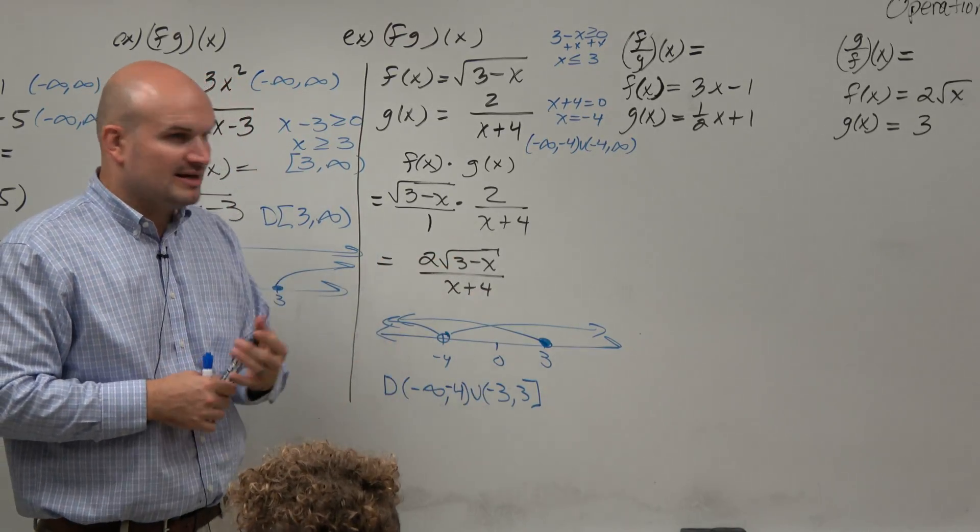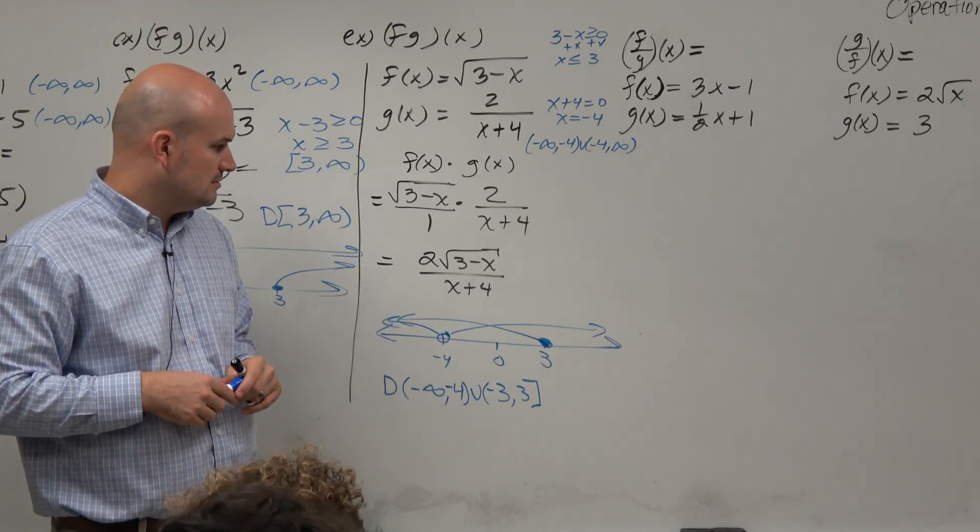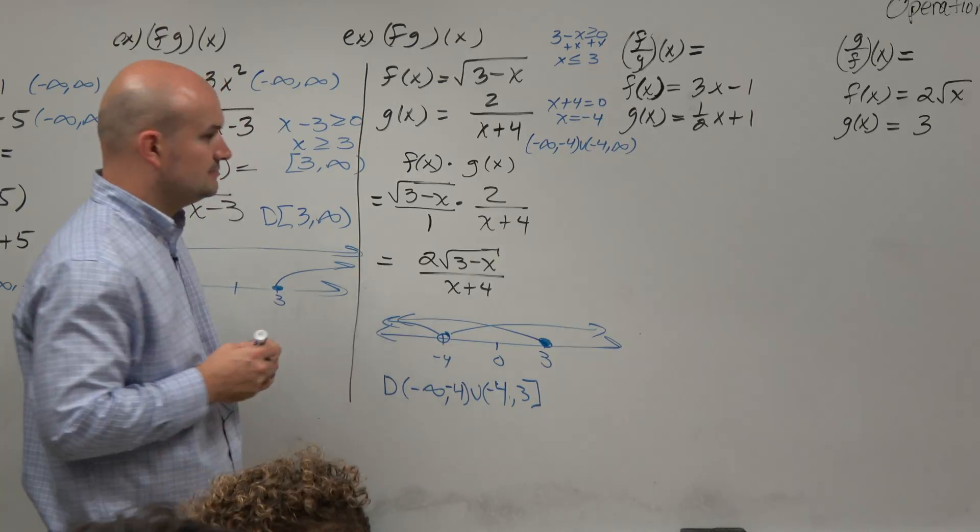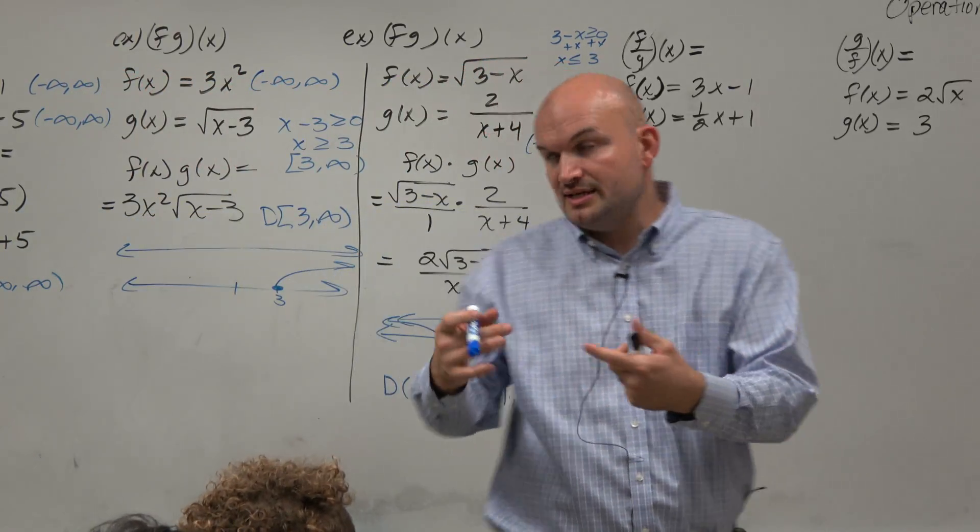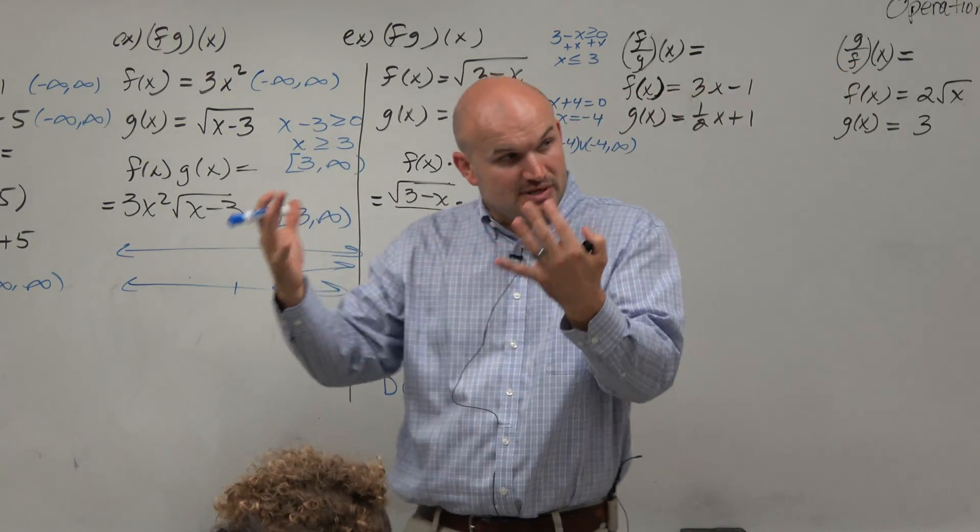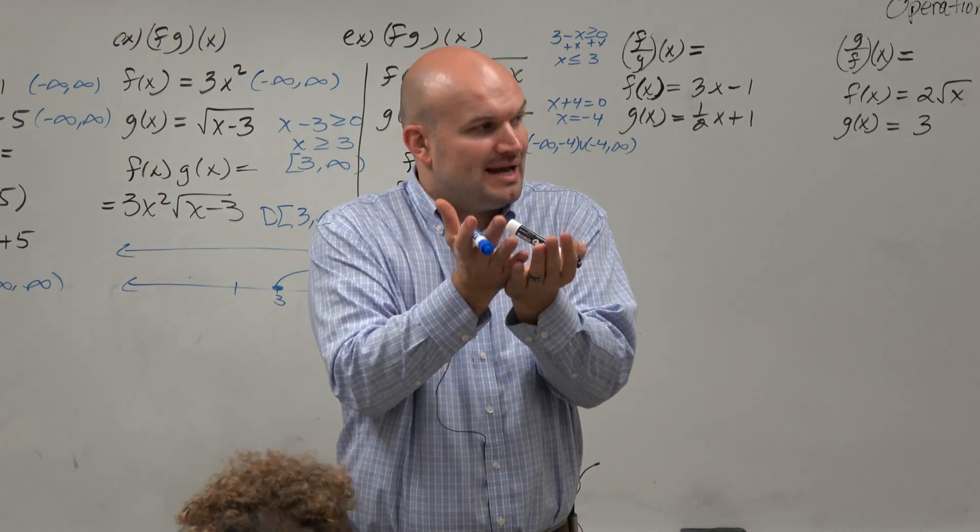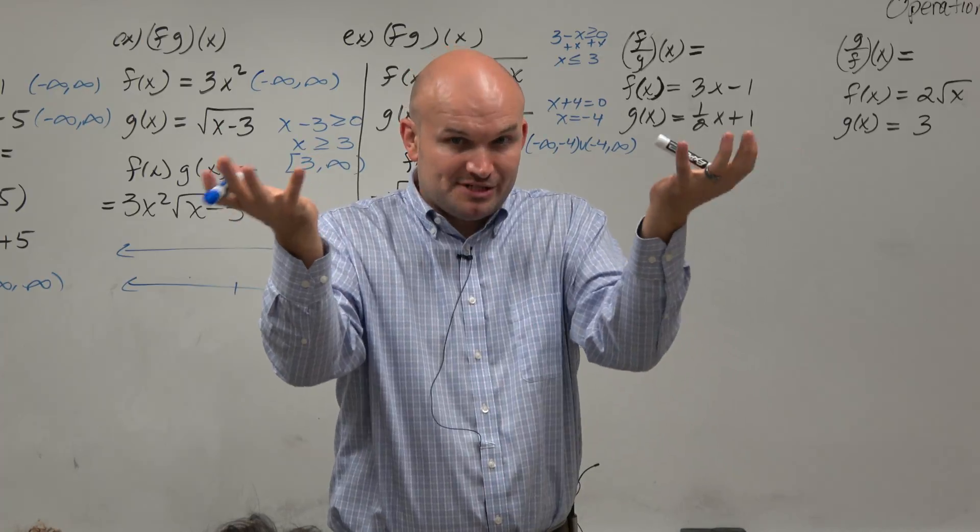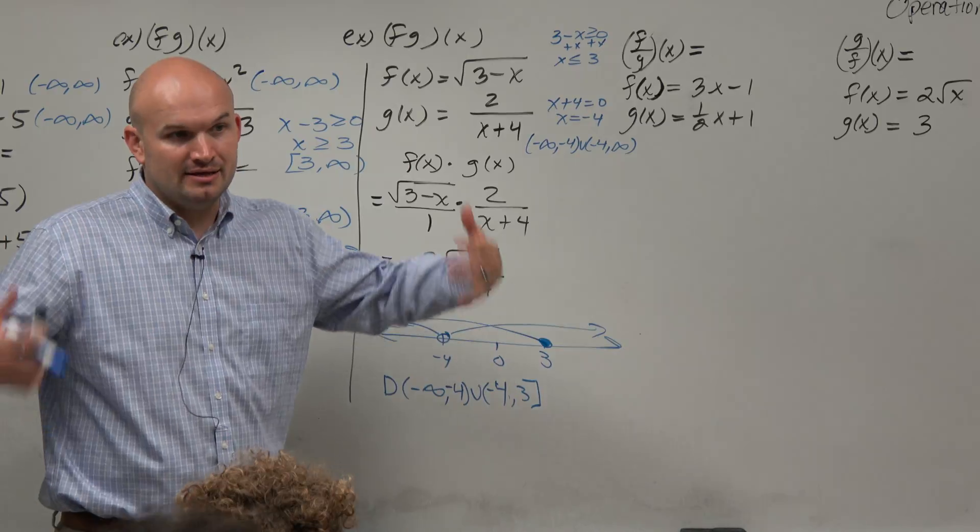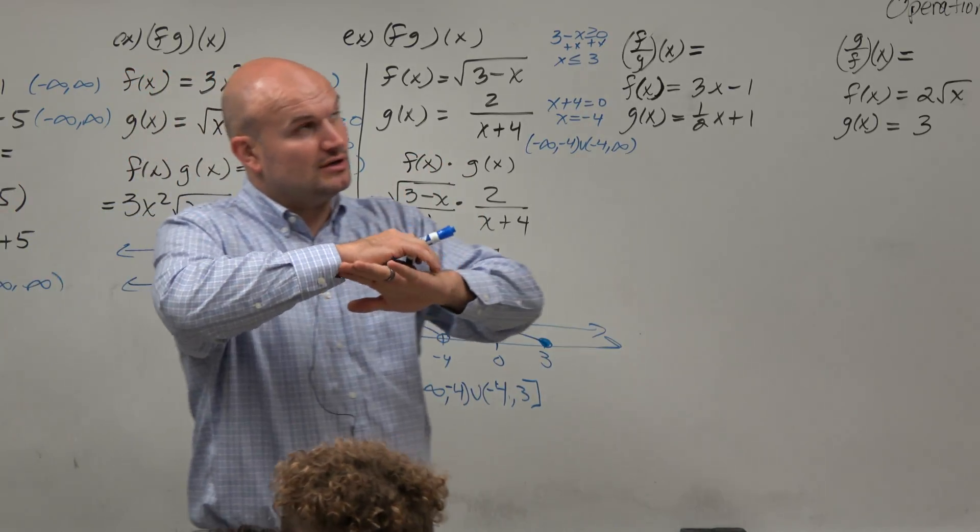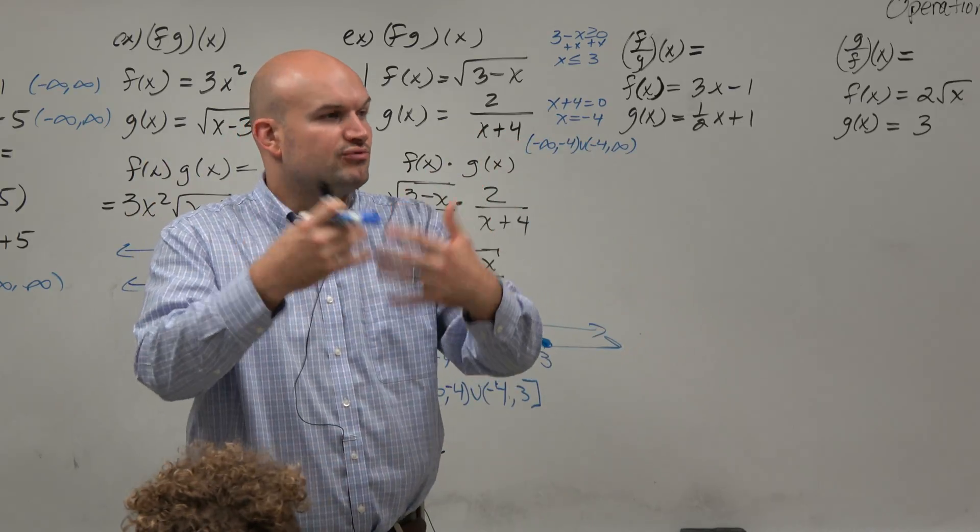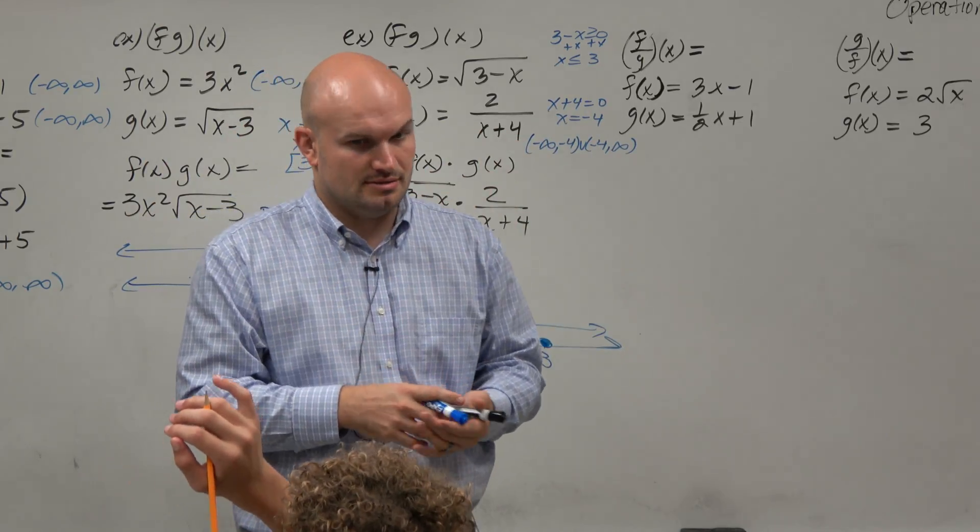So you guys don't have to graph them, but I think it is helpful. Sorry, it's negative 4, right? Yeah. So basically, all I want you guys to take away from this is when you're adding, subtracting, or multiplying, you're combining the domains. So whatever domains you're given, just combine them and find the intersection of the domains. So as long as they have the same values, or the domains are the same for certain values, that's going to be the domain of the product, sum, or difference.